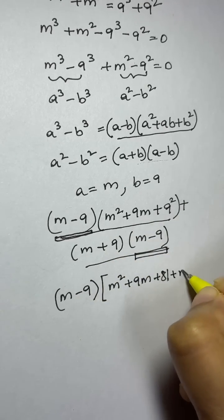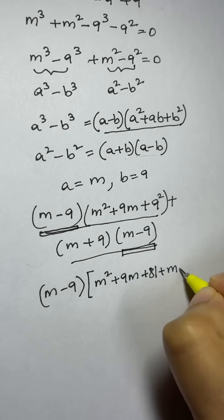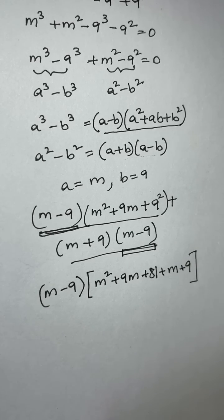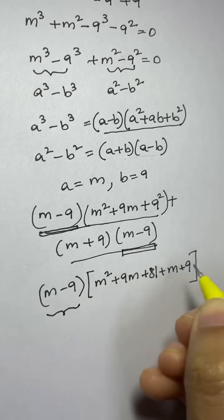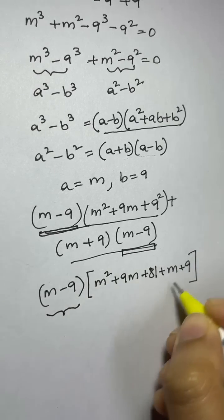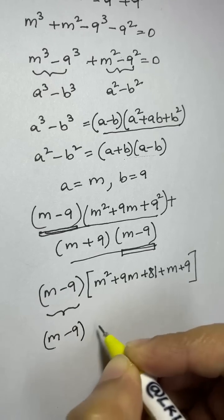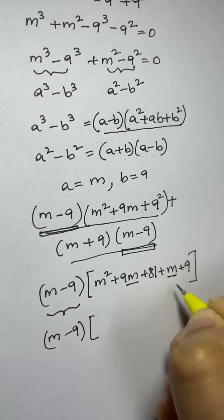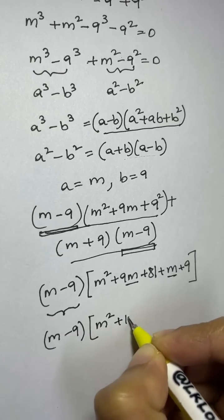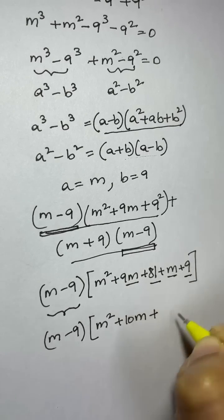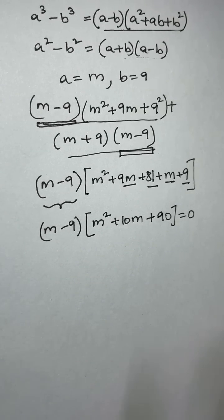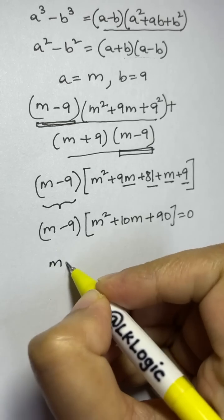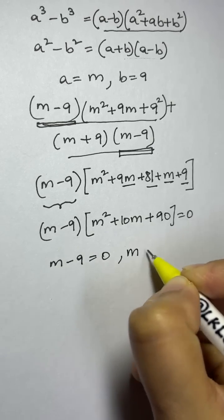Taking (m minus 9) common, we are left with m squared plus 9m plus 81 plus m plus 9 inside the bracket. Combining like terms: 9m plus m is 10m, and 81 plus 9 is 90. From the first factor, m minus 9 equals zero, so m equals 9.